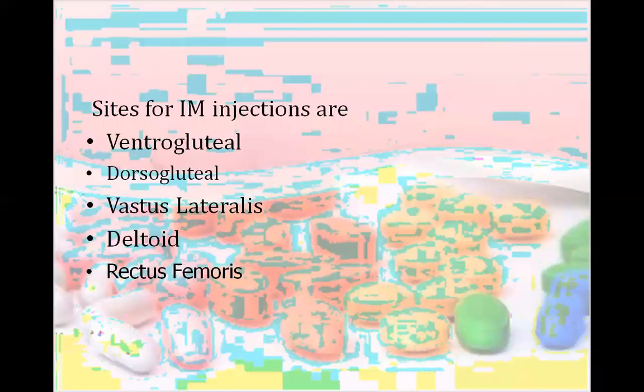The sites for IM injection are: ventrogluteal site, dorsogluteal site, vastus lateralis, deltoid, and rectus femoris.